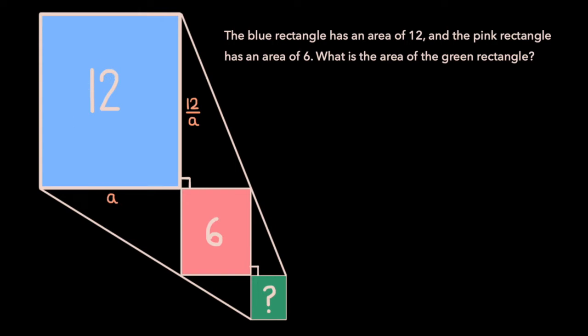Now if we do the same for the pink rectangle, let's say the longer side of the pink rectangle is of length b, then we know the shorter side must be of length 6 over b, because the area of the pink rectangle is 6.